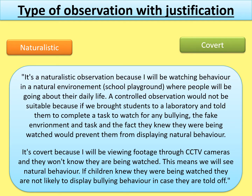The stimulus said you're going to view CCTV footage, which indicates it's going to be a covert observation — the children don't know they're being watched. You need to say it's covert because you'll be viewing footage through CCTV cameras and they won't know they're being watched, so the examiner knows you understand what a covert observation is. Then justify it: this means you will see natural behaviour, because if children knew they were being watched they're not likely to display bullying behaviour in case they are told off. You could also mention non-participant, saying if you were a participant the children would wonder who you were and it would be very hard to record the behaviour.